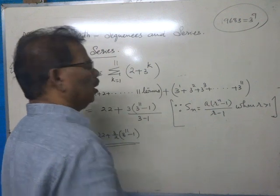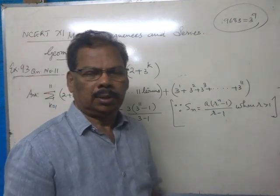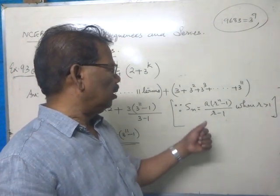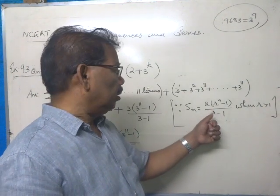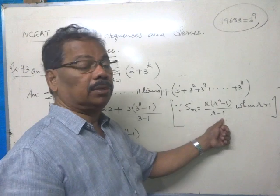And we have the formula, sum to n terms of a GP, when the common ratio is greater than 1, given by S_n equals a into r raised to n minus 1, divided by r minus 1.